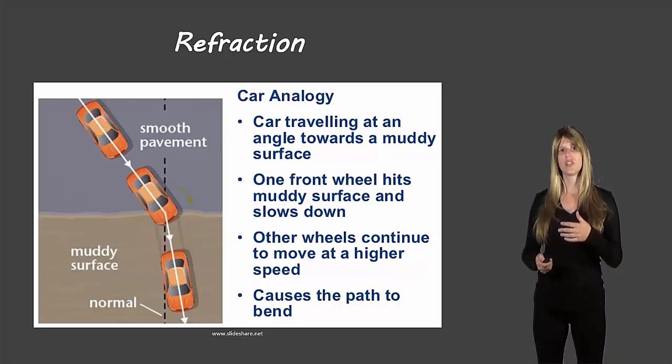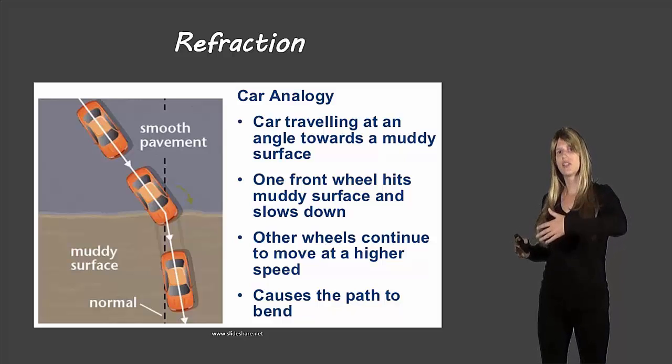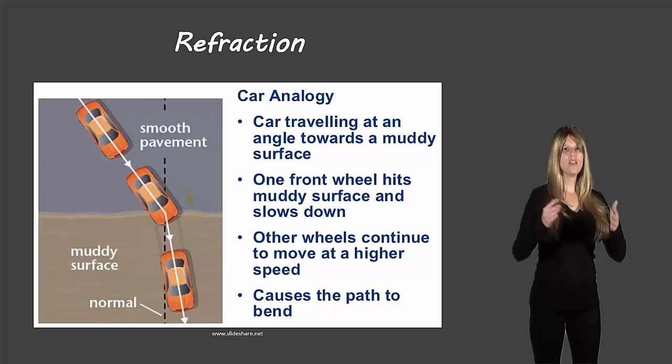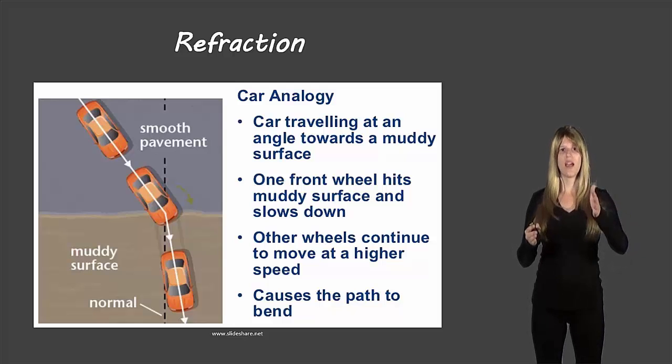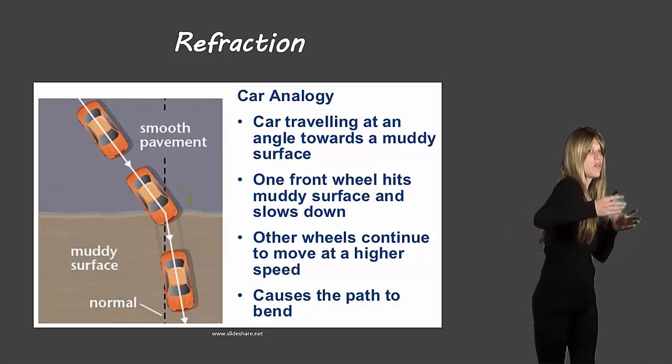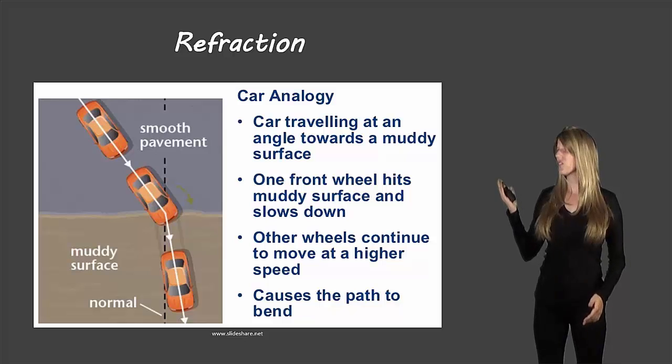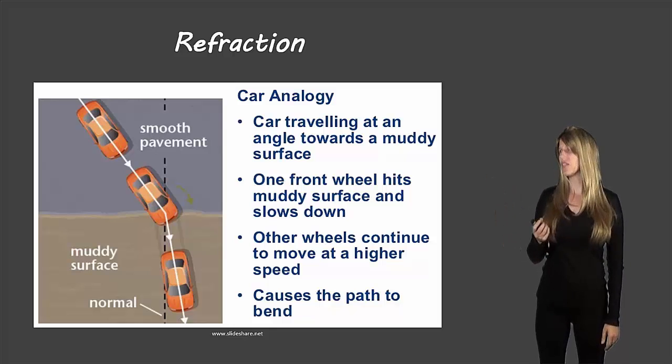The tire that's in the muddy surface is going to slow down and the other tire will continue going at the same speed. So it will actually cause the car to turn. So if I'm the car here and this tire is going to hit the muddy surface first and this one is going to go the original speed. When I hit that muddy surface, this one slows down, but this one keeps going fast and turns me around sideways. And then both of them will continue at the same speed once they hit that muddy surface. So you can see in the picture here that's exactly what's happening with this car.